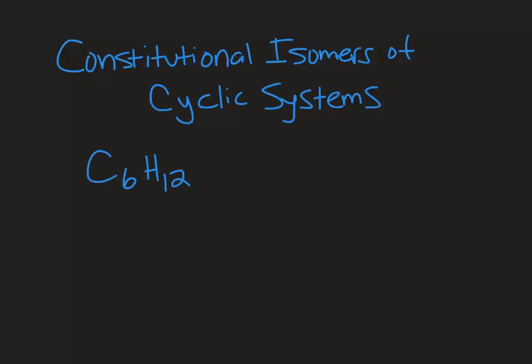Welcome to Chemistry with Caroline. In this video we're going to take a look at the constitutional isomers of cyclic systems. So we're starting out with a molecular formula C6H12 that requires that I have a ring or a double bond. In this case we're going to do cyclic systems.